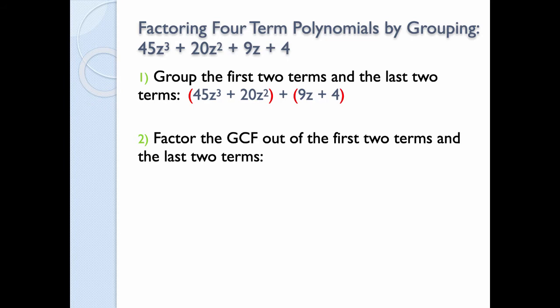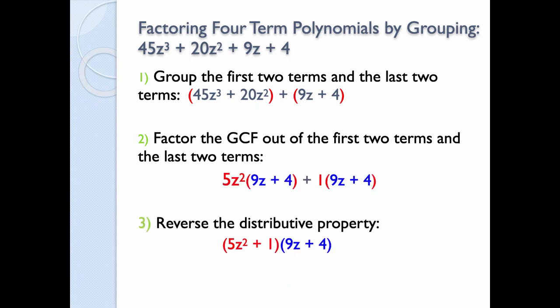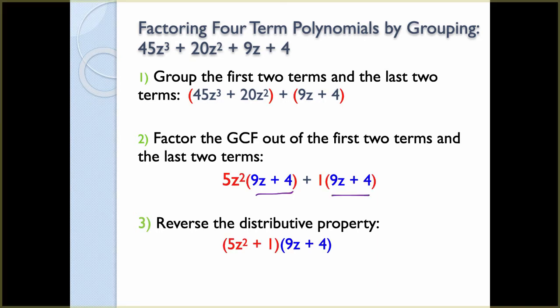Between 45z³ and 20z², we can pull out a 5z². Between 9z and 4, we can pull out a 1. We have the 5z² that comes out front, and then 9z + 4 in parentheses. We pull a 1 out of the second group, and we're left with 9z + 4. When factoring by grouping, the expressions in parentheses — the 9z + 4 — must match. If they are not the same, either it's not factorable or you've made a mistake when you found your GCF.